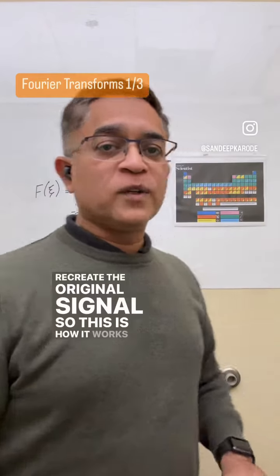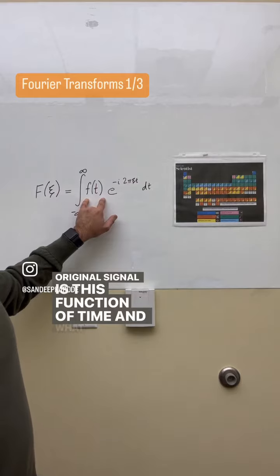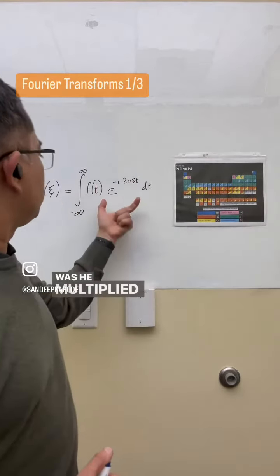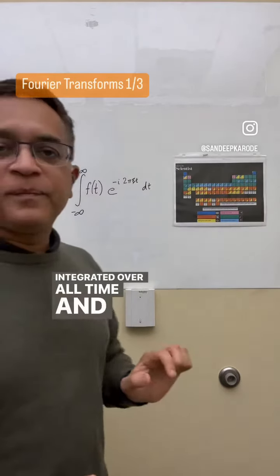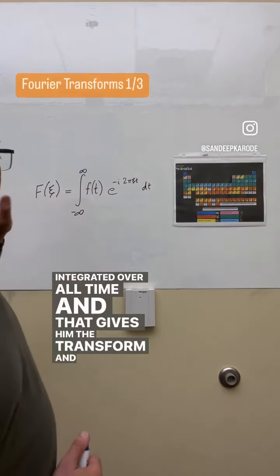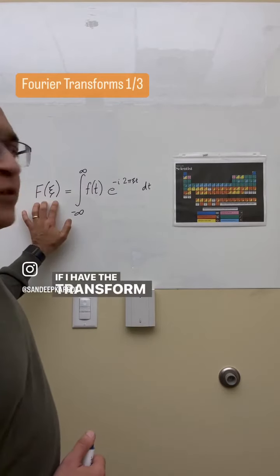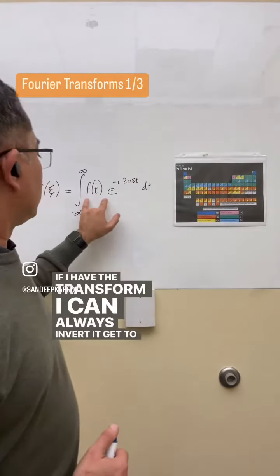So, this is how it works. The original signal is this function of time and what Fourier did was, he multiplied that by this complex exponential and he integrated over all time. And that gives him the Fourier transform. And if I have the Fourier transform, I can always invert it to get to the original function.